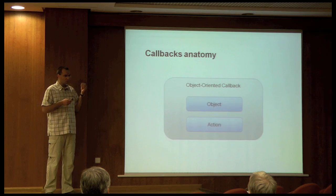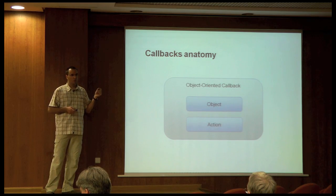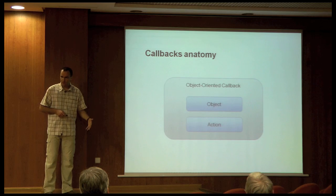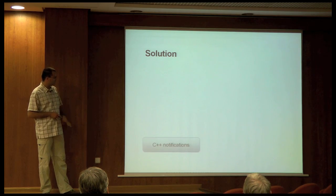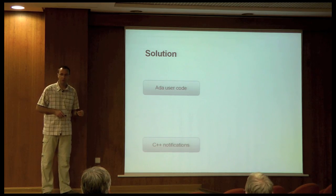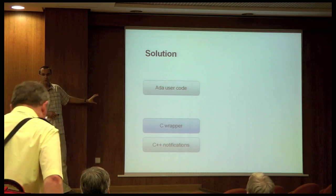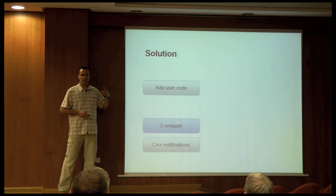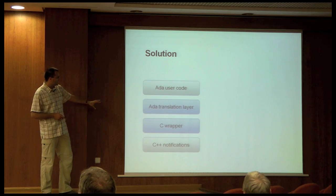This brings us to the idea of additional translation layers. One translation layer at the Ada side will decompose the object-oriented invocation into these two constituents and send it down. Another translation layer at the C++ level will try to do something with it. So the architecture is really this: at the very bottom we have the C++ library with a notification engine; at the very top there will be Ada user code with handlers which are instances of some target type; and in between there will be two translation layers. One is a C wrapper — it's really C++ code that exposes its entries as C functions so that they can be seen by the Ada code. And there is the Ada translation layer.